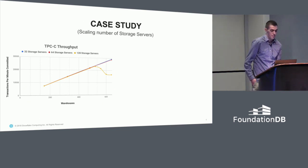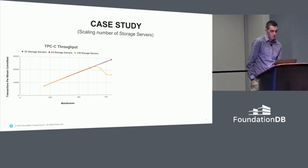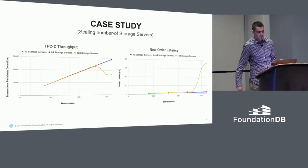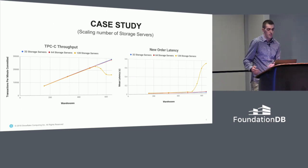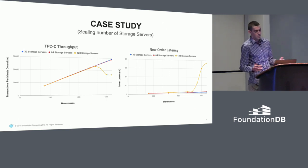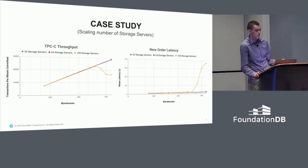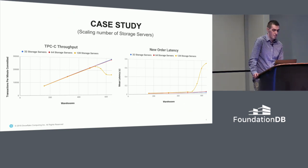So ideally one would expect linear scaling of throughput, and that's what we saw with 32 or 64 storage servers, but in this particular configuration when we went to 128 we started seeing decreased throughput. We found — for reasons we still don't entirely understand and are still investigating — an increase in read latency as we scaled out. This causes longer transactions, and with the way FoundationDB handles optimistic concurrency control, longer transactions result in a higher conflict probability, which resulted in the decrease in throughput.